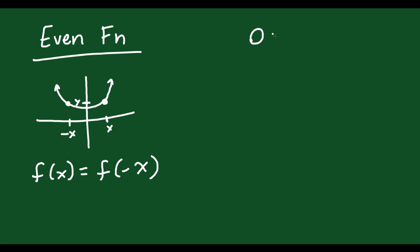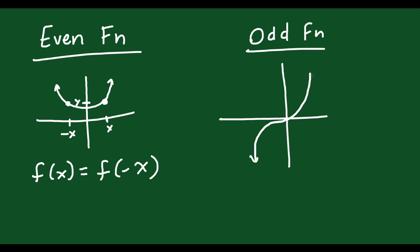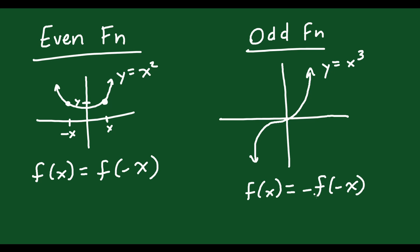From that, we can talk about what an odd function is. An example of an odd function would be something like y equals x cubed — a cubic. This is an odd function because f of x equals negative f of negative x. Another way to say this is: negative f of x equals f of negative x. What this means is that if you plug in a particular x, you get a particular y value, but if you plug in the negative of that x, you get the negative of that y value. So it's not symmetrical over the y-axis — instead, it's symmetrical about the origin.